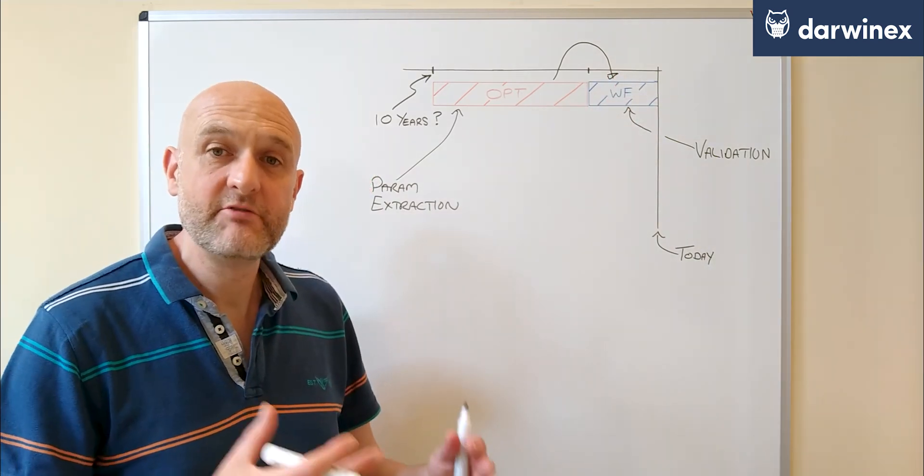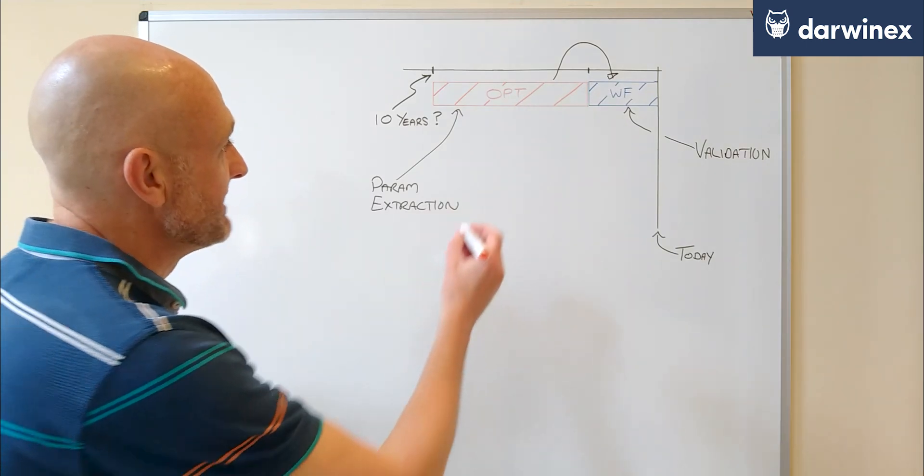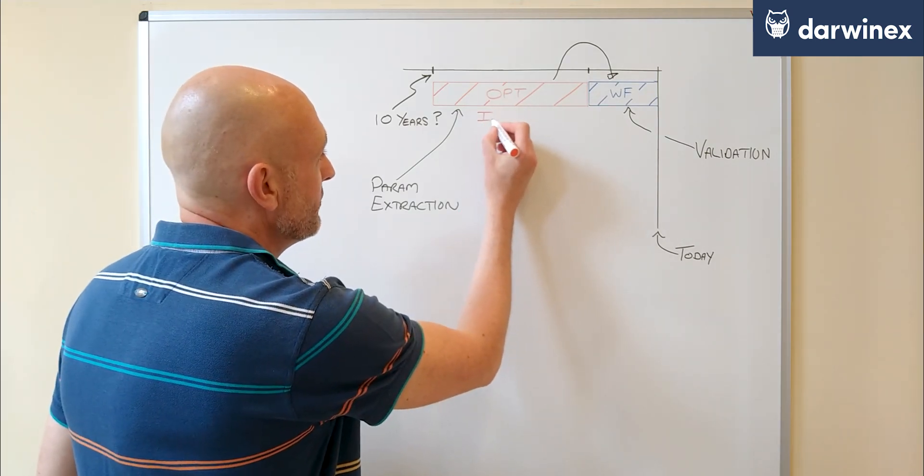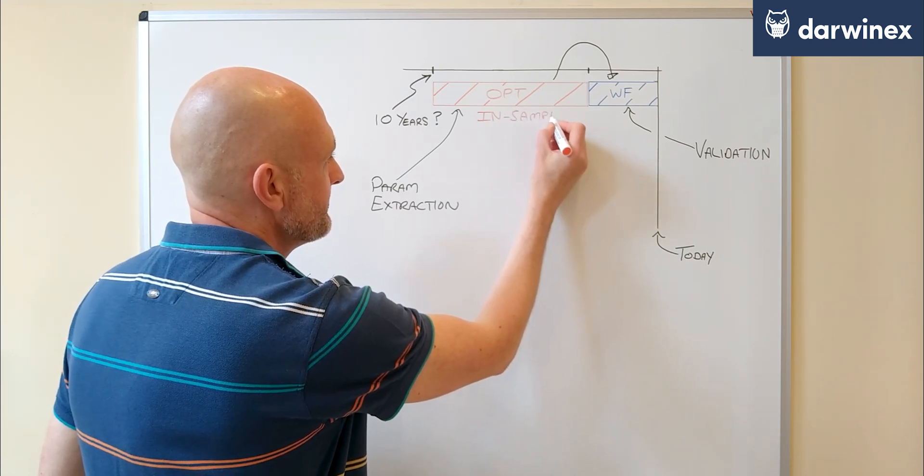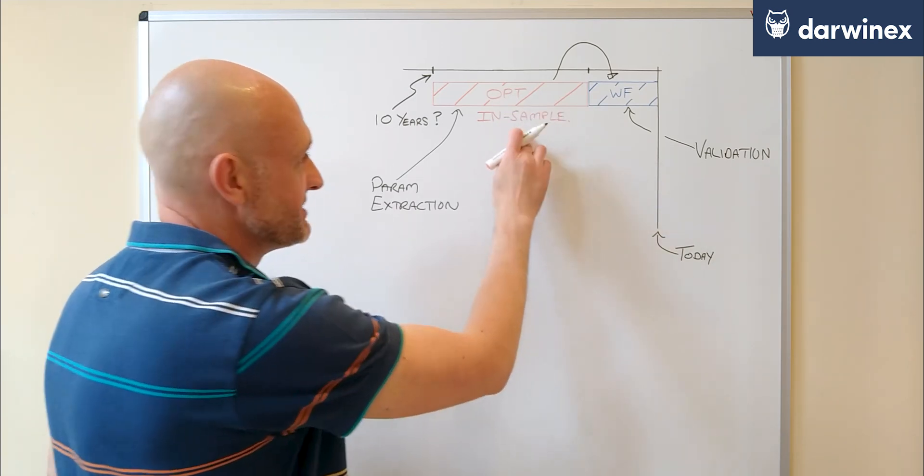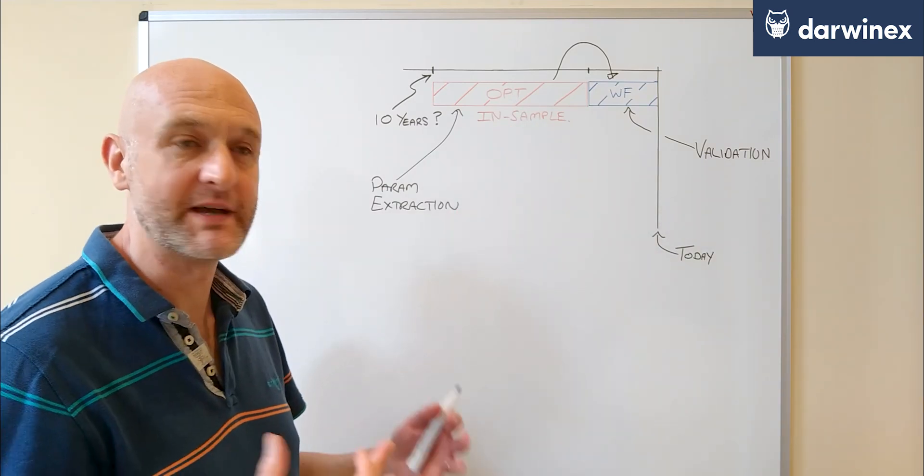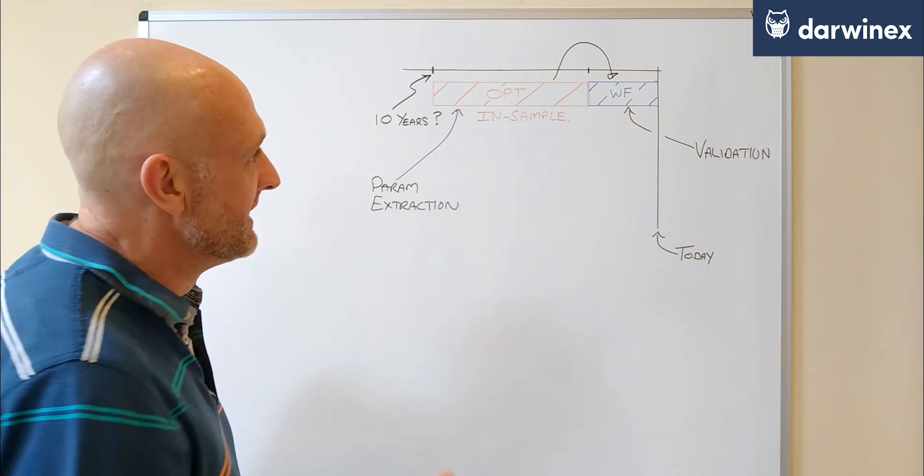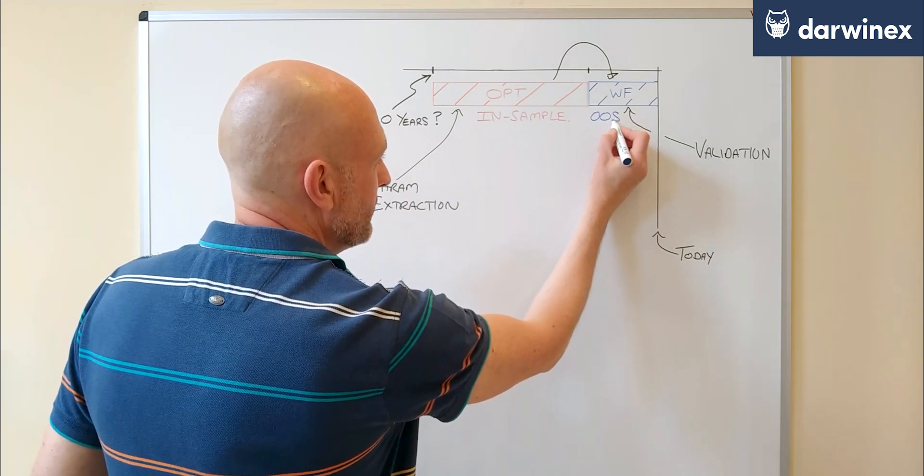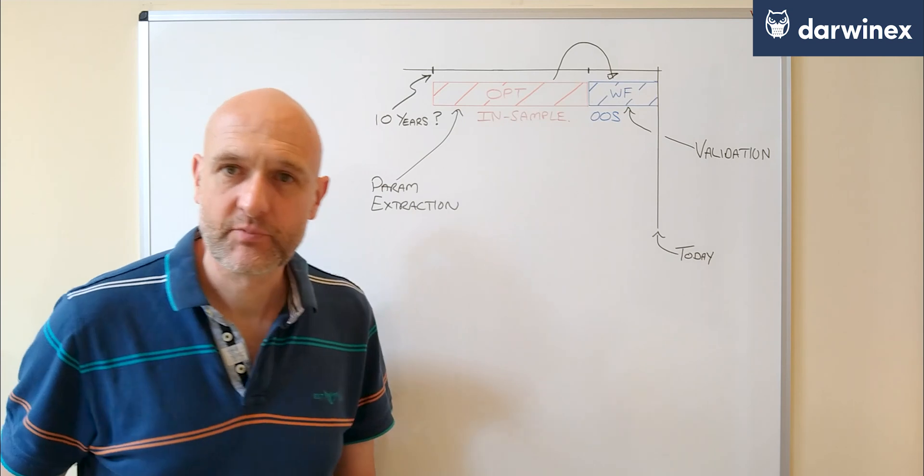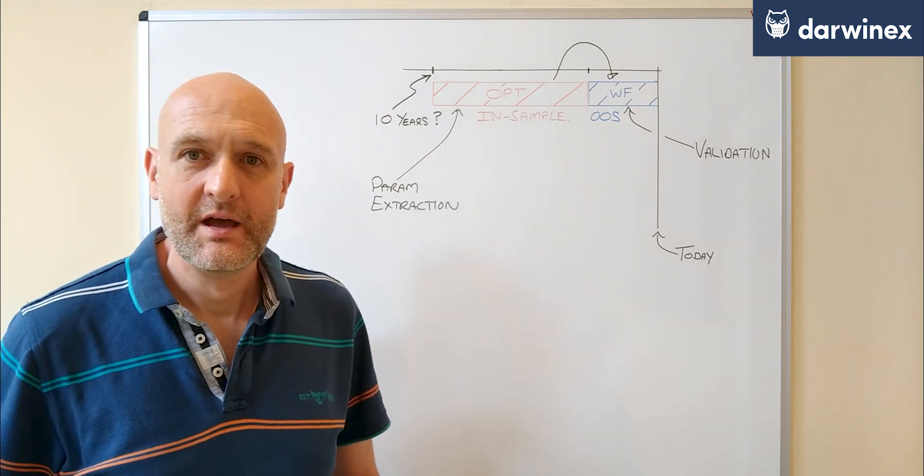Now the period of data that we use for the optimization is what we call in-sample data, because it's being used to determine those best parameters.